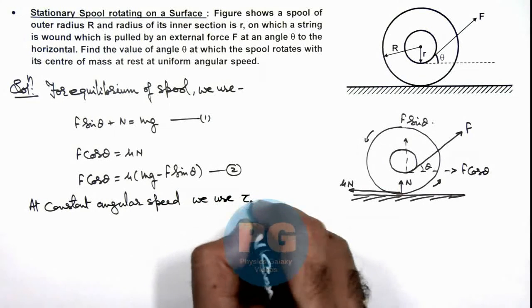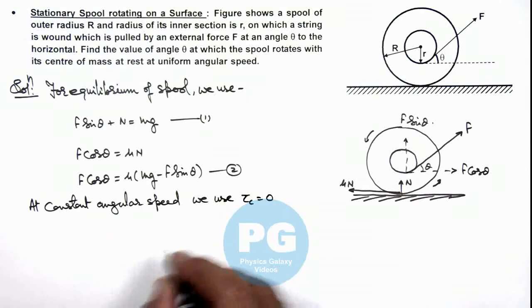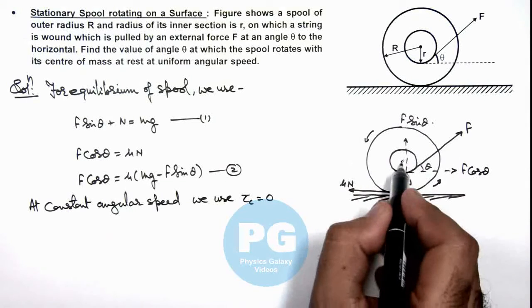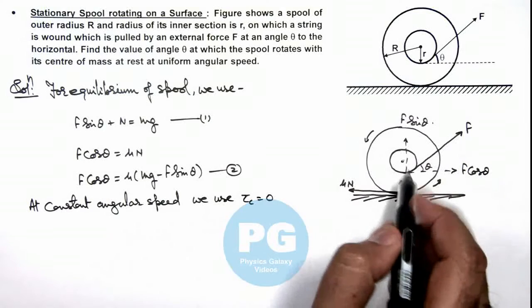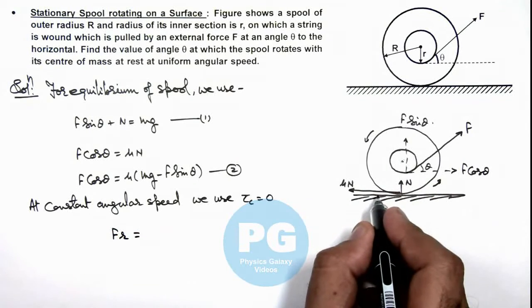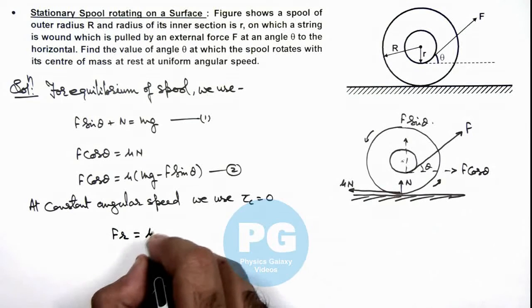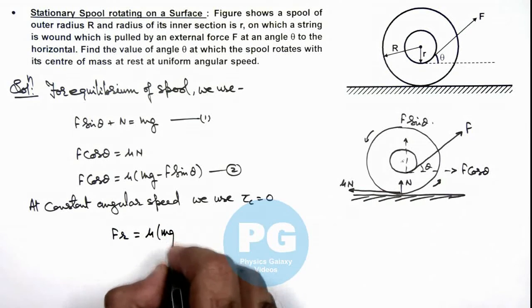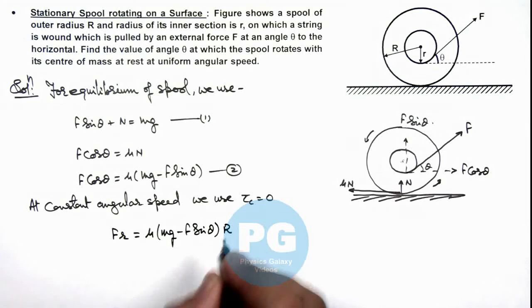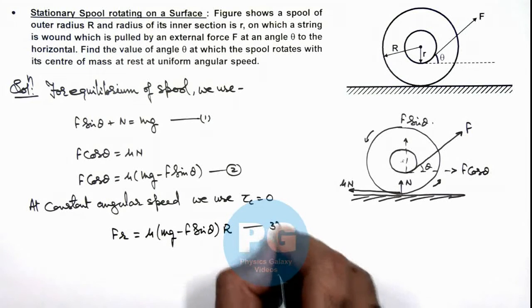Net torque about the center of spool should be zero. So the anticlockwise torque is due to this force which can be given as F r and that must be balanced by the torque of friction, which is mu N which we can write as mg minus F sin theta multiplied by capital R. That is say equation 3.